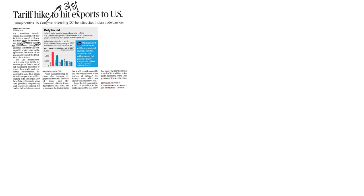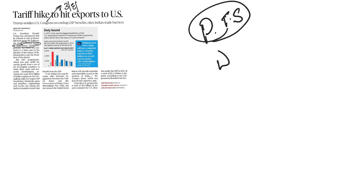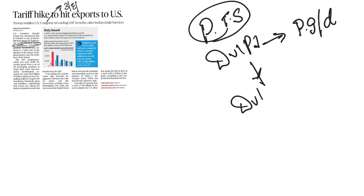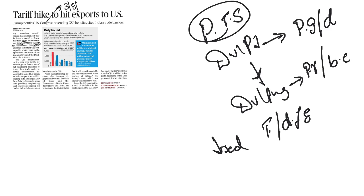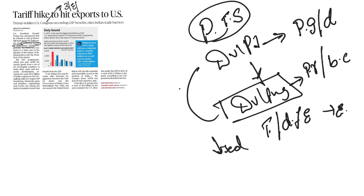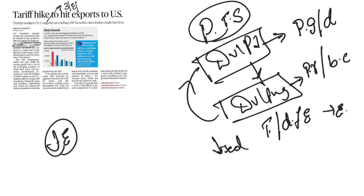The Generalized System of Preferences (GSP) is a preferential tariff system extended by developed countries — also known as preference-giving or donor countries — to developing countries, also known as preference-receiving or beneficiary countries. This involves reduced tariffs or duty-free entry for eligible products exported by beneficiary countries to donor country markets. The main benefit is that Indian exporters get access to importer markets through reduced or duty-free tariffs on eligible Indian products.